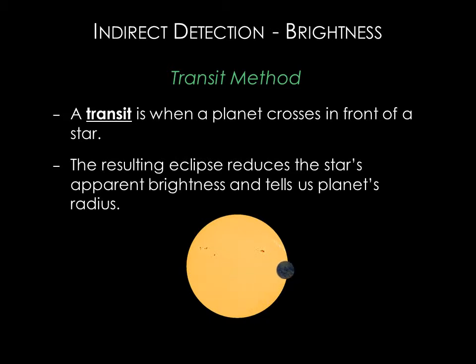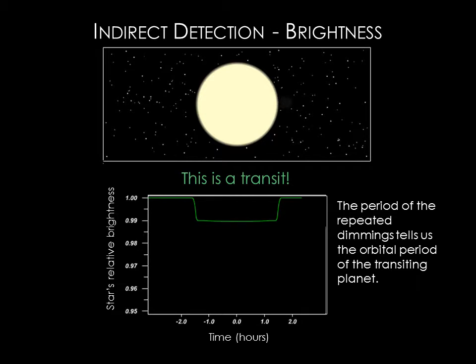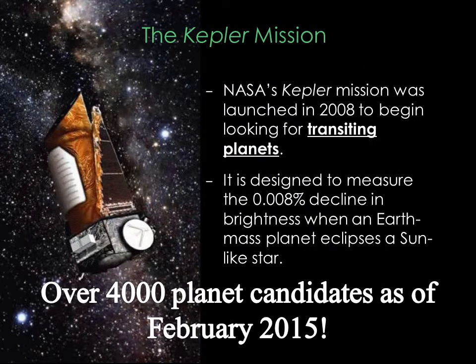The second general method of detecting planets indirectly is called the transit method. If a star system is lined up so that we are seeing it edge-on, then one or more of its planets will pass directly between us and the star once each orbit, resulting in a transit. The eclipse reduces the star's apparent brightness and can tell us something about the planet's radius. Because most stars exhibit some intrinsic variations in brightness, we can be confident we've detected a planet only if we observe the dips in brightness repeating regularly. The Kepler mission uses the transit method to discover exoplanets, with the goal of finding Earth-like planets in Earth-like orbits that could potentially harbor life. Kepler has been enormously successful, finding over 4,000 planet candidates, some of which are in the habitable zone.